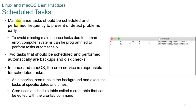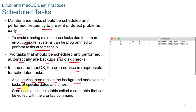Maintenance tasks should be scheduled and performed frequently to prevent or detect problems. To avoid missing tasks due to human error, computer systems can be programmed to perform them automatically. Two tasks that should be scheduled automatically are backups and disk checks. In Linux and Mac, the cron service is responsible for scheduled tasking. Cron runs in the background and executes tasks at specific dates and times, using a scheduled table called a crontab that can be edited with the crontab command.